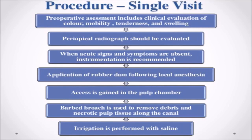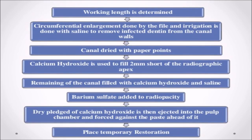Apexification Procedure — Single Visit. Preoperative assessment includes clinical evaluation of color, mobility, tenderness, and swelling. Periapical radiograph should be evaluated. When acute signs and symptoms are absent, instrumentation is recommended. Application of rubber dam following local anesthesia. Access is gained into the pulp chamber. A barbed broach is used to remove debris and necrotic pulp tissue along the canal. Irrigation is performed with saline. Working length is determined.